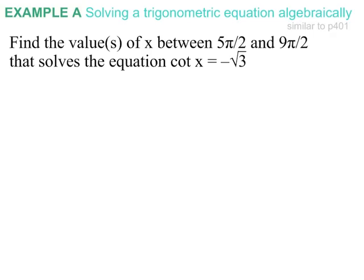Alright, our first example is solving a trigonometric equation algebraically. We are asked to find the value or values of x between 5π/2 and 9π/2 that solve the equation cot x = -√3. Well, I'm going to start by trying to figure out where is 5π/2 and 9π/2 on the unit circle.